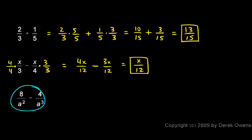And in this example, I have 8 over a squared minus 4 over a cubed. I need a common denominator, and the least common denominator will be a cubed. And I can get this fraction, this first one, to have a denominator of a cubed if I multiply by a over a. So I'm just multiplying this first fraction by that.